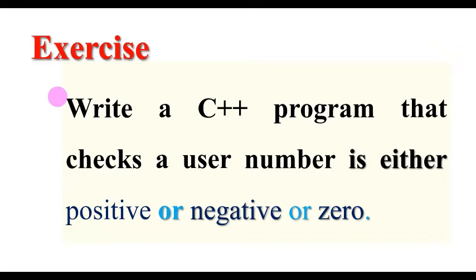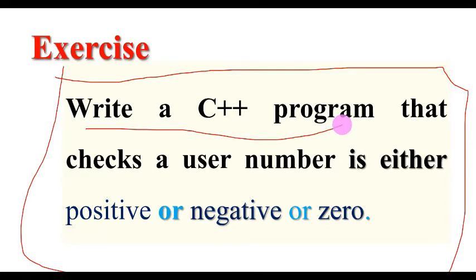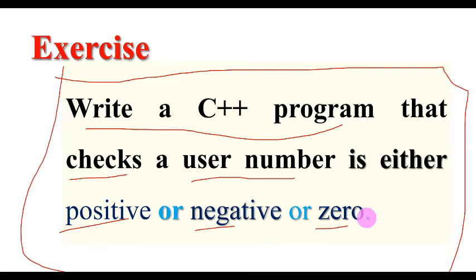The program checks whether the given input from the user is positive, negative, or zero. For instance, the instruction is: write a C++ program that checks the user's input and determines whether it is positive, negative, or zero. If I give a negative value, it must say this number is negative; if positive, this number is positive; if zero, the output must be zero.